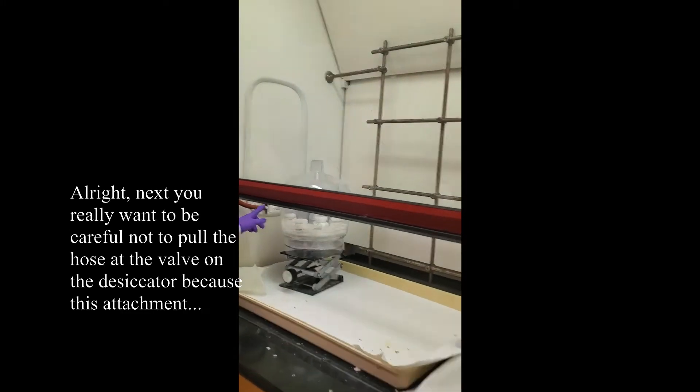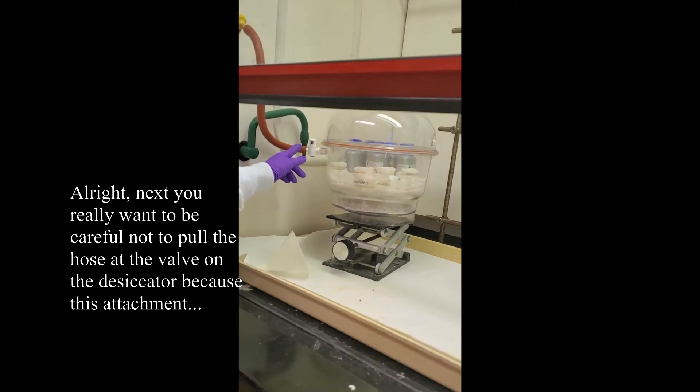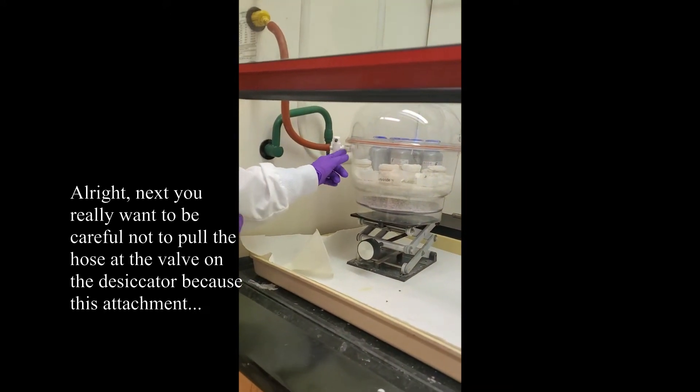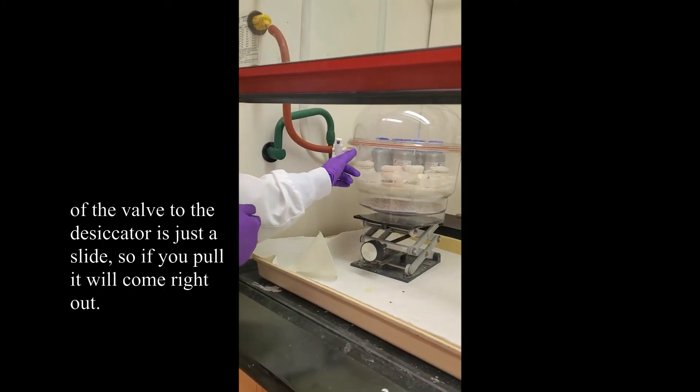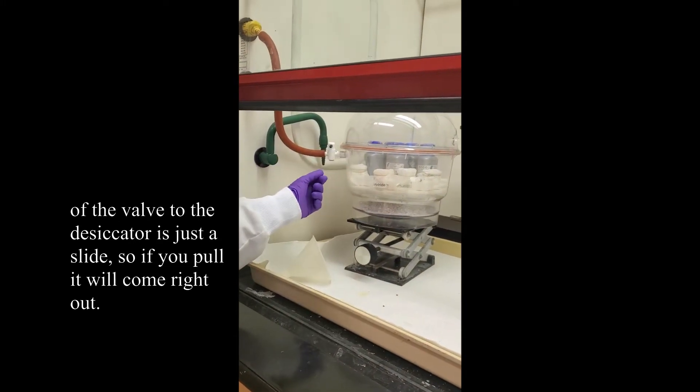Next, you really want to be careful not to pull the hose at the valve on the desiccator because this attachment of the valve to the desiccator is just a slide. So if you pull, it will come right out.